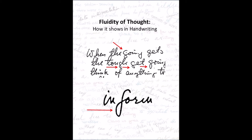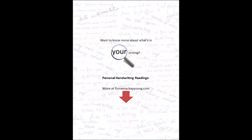It can show in other letters — for example, it can show in the lower case g loop going into an h loop — but the f and the g are the most common. So that's fluidity of thought.